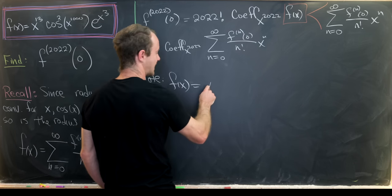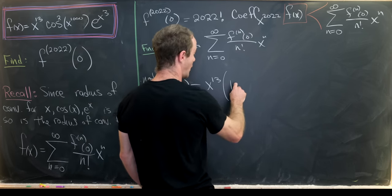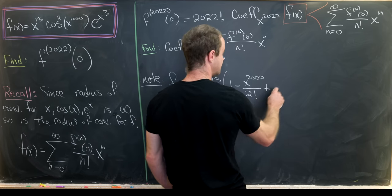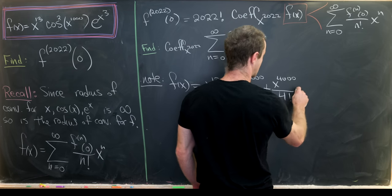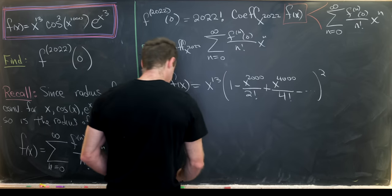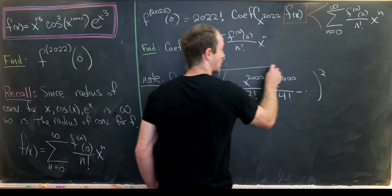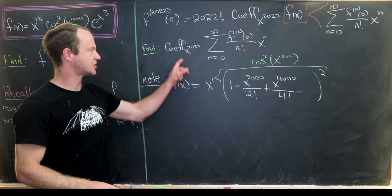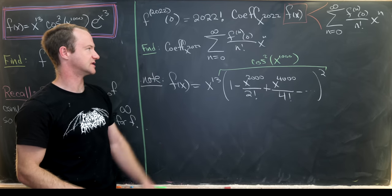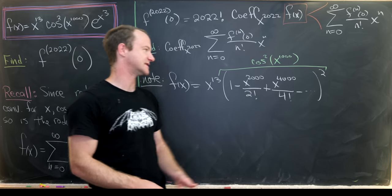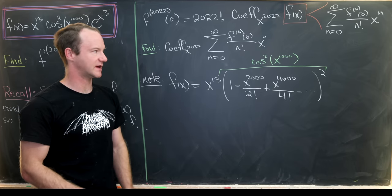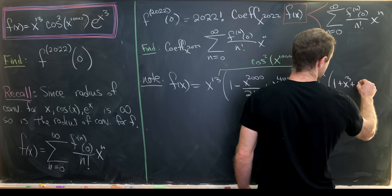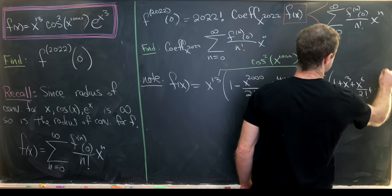So note that f of x equals x to the 13 times 1 minus x to the 2000 over 2 factorial plus x to the 4000 over 4 factorial minus dot dot dot squared. So that's the first couple of terms of our cosine expansion. This is cosine squared x to the 1000. But since we're trying to extract the coefficient of x to the 2022 we actually don't need anything past this x to the 2000 because that gives us too large of a power of x. Then we need our exponential part. So this will be 1 plus x cubed plus x to the 6 over 2 factorial plus dot dot dot.